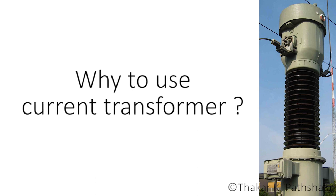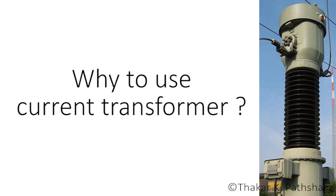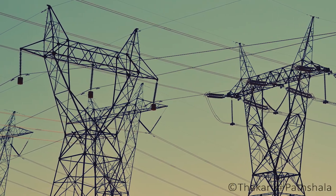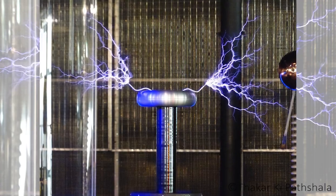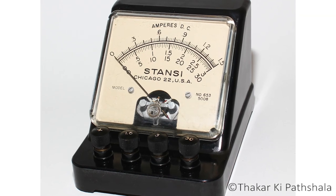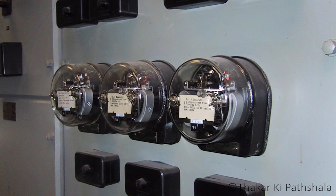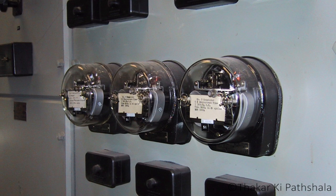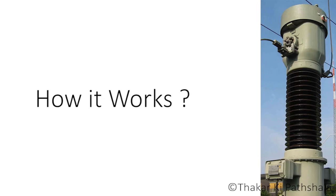Now another question comes to mind: why on earth do we need to step up or step down current when we are already stepping up and down voltage and are totally fine with it? We need to do this because whenever we are working with very high power lines, the associated current is very high, and our normal meters and protective relaying circuits simply can't handle that much current. So in order to measure high current and to use different relays, we need to step it down.